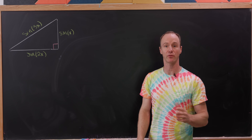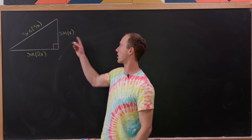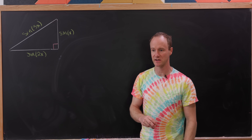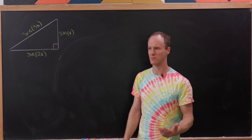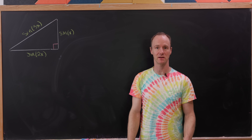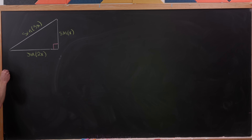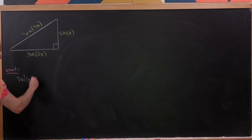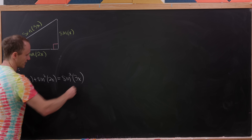Today I want to look at this really aesthetically pleasing problem: is there a right triangle where the side lengths are sine x, sine 2x, and the hypotenuse has length sine 3x? Such a right triangle will exist if and only if the Pythagorean theorem relationship between the sides and the hypotenuse holds. So let's note what we want here before we jump into the calculation.